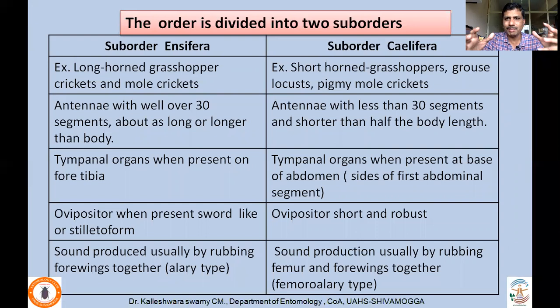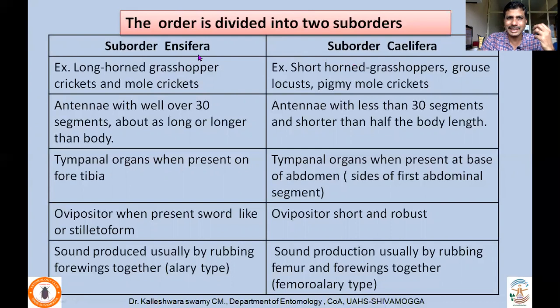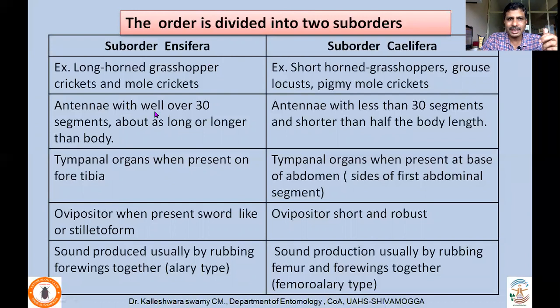This is a comparatively large order. The order is divided into two suborders: Suborder Ensifera and Suborder Caelifera. Listen carefully to the pronunciation, as mispronunciation can lead to spelling mistakes. The pronunciation of order names, scientific names, and family names is very important. Ensifera includes long-horned grasshoppers, crickets, and mole crickets, whereas Caelifera includes short-horned grasshoppers, grouse locusts, and pygmy mole crickets, which also includes locusts.